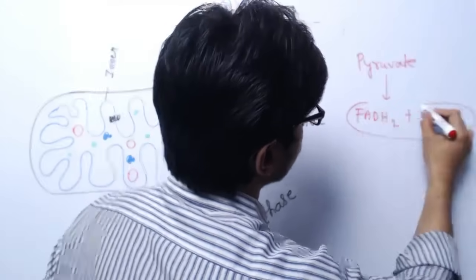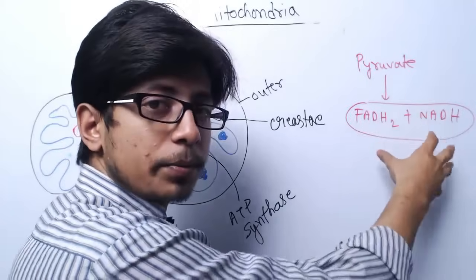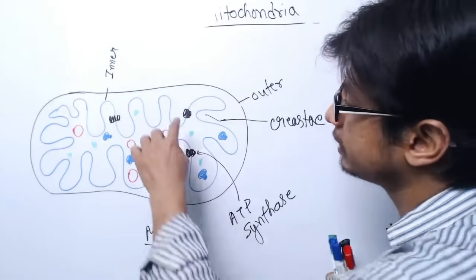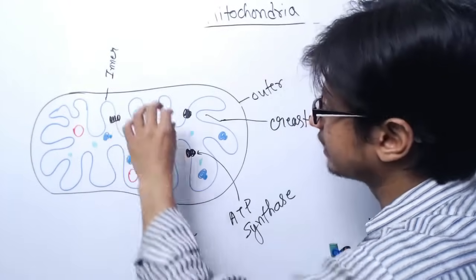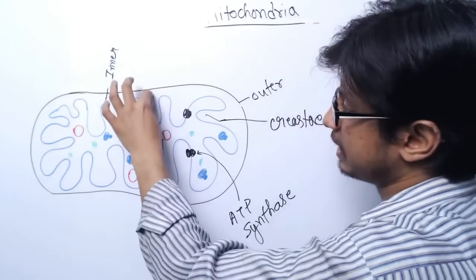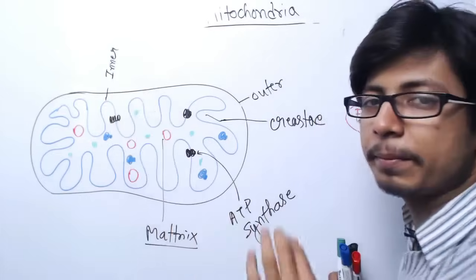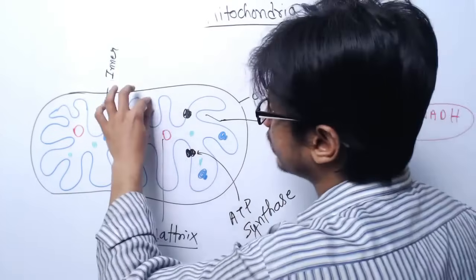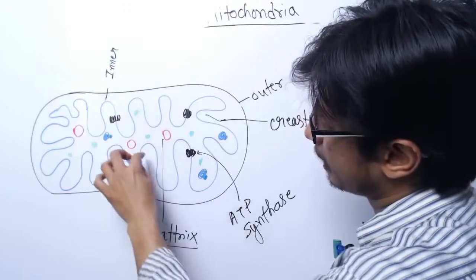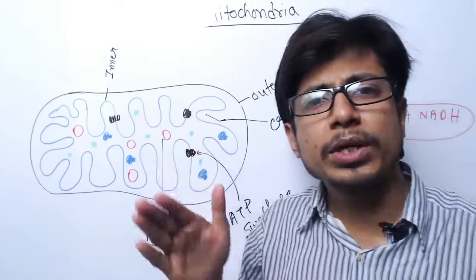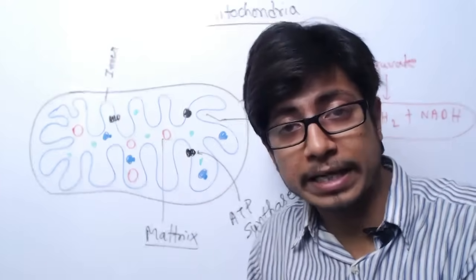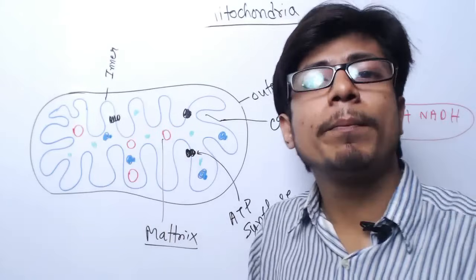FADH2 and NADH are energy-carrying molecules. Once these energy-carrying molecules are produced, there is an electron transport system found in the inner membrane. The space between the outer membrane and inner membrane is known as the intermembrane space. In the inner membrane, there are specific factors and proteins embedded — other than ATP synthase, there are protein complexes. We call them different complexes, like Complex 1, Complex 2, Complex 3.